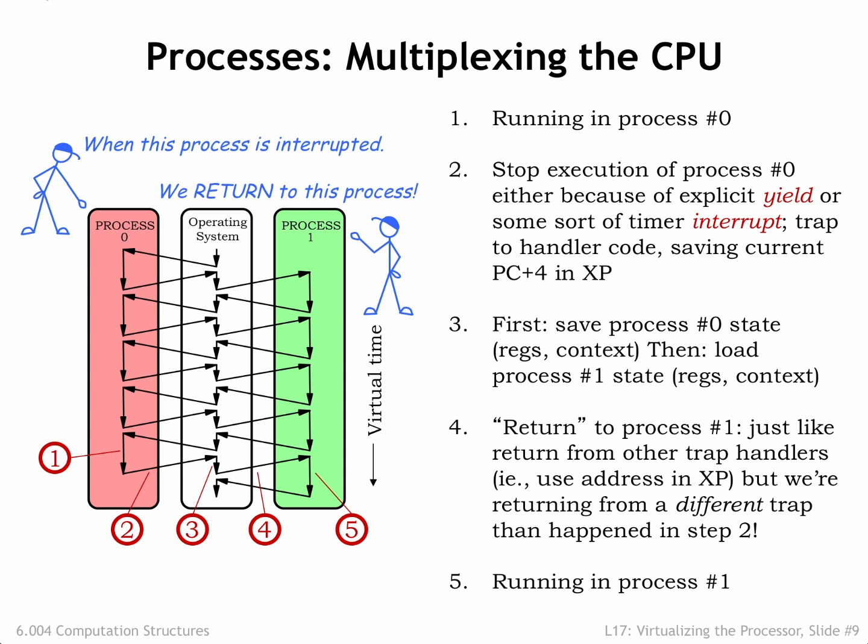We've interrupted one process and resumed execution of another. We'll keep doing this in a round-robin fashion, giving each process a chance to run before starting another round of execution. The black arrows give a sense for how time proceeds — for each process, virtual time unfolds as a sequence of executed instructions. Unless it looks at a real-time clock, a process is unaware that occasionally its execution is suspended for a while. The suspension and resumption are completely transparent to a running process.